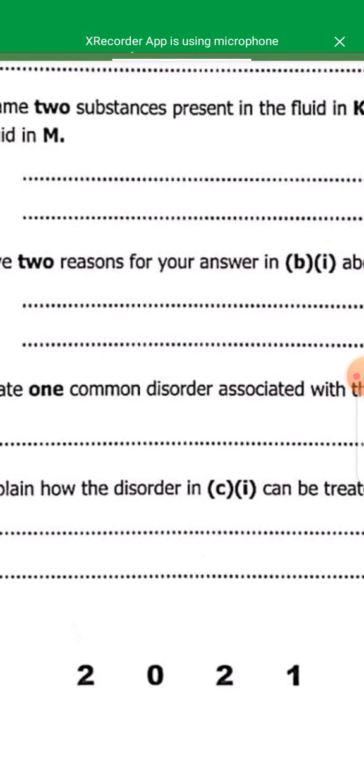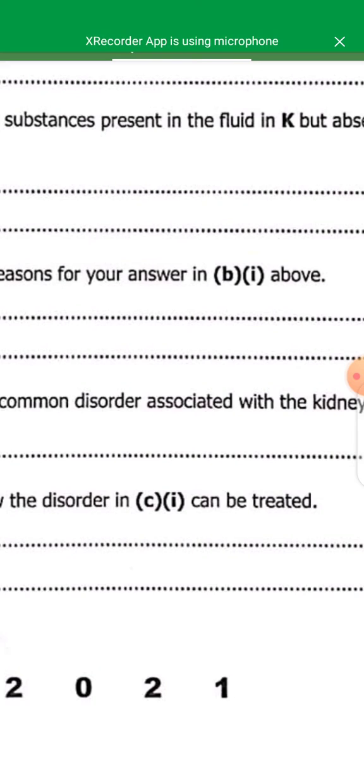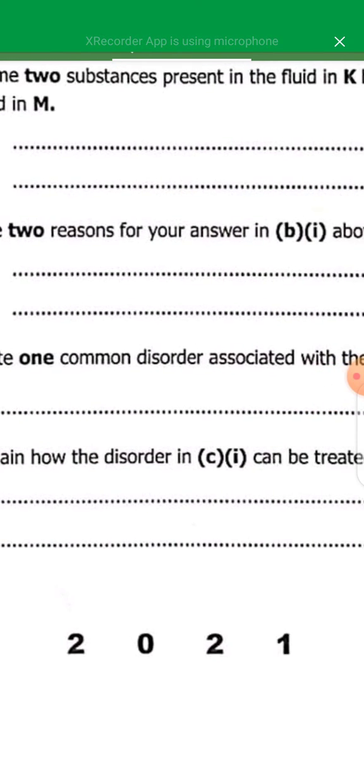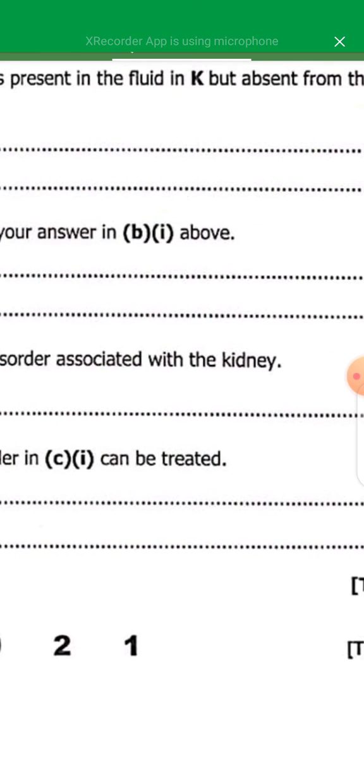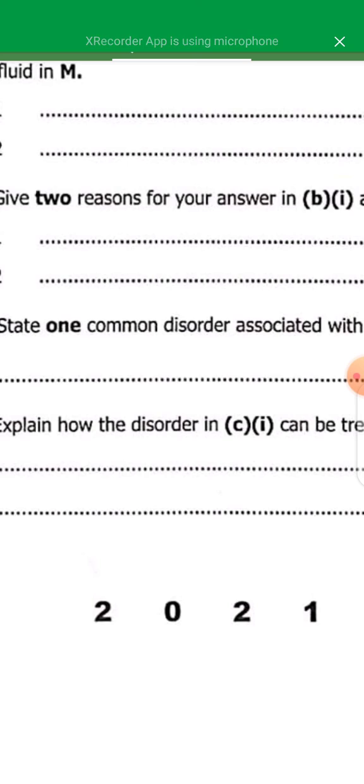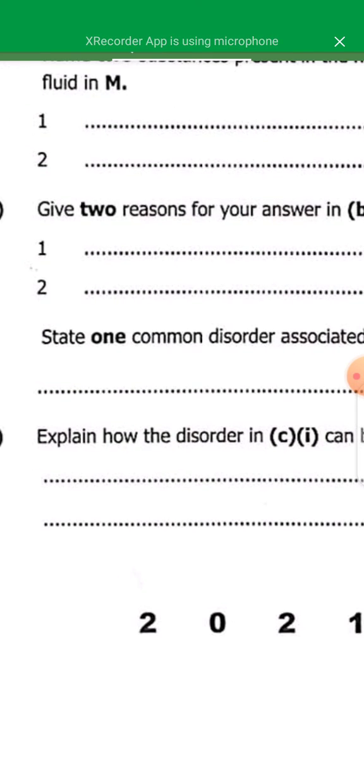Explain how the disorder in C1 can be treated. So if a person smokes too much, if they drink too much, it's just to stop. But if you look at our question, it says how we can treat it. So kidney failure can only be treated in two ways. It's either through a kidney transplant or a dialysis machine.